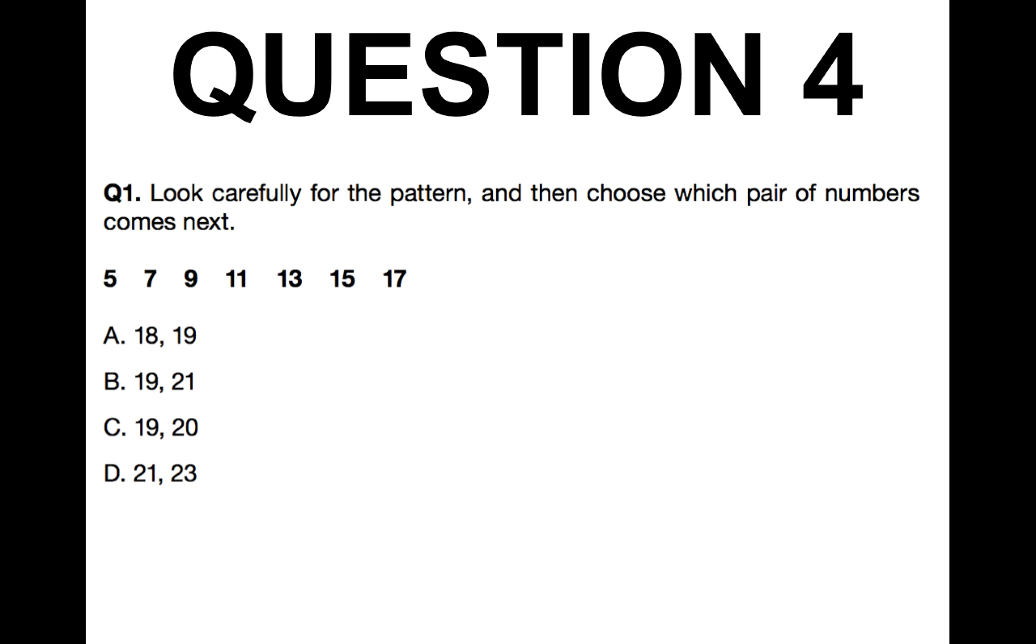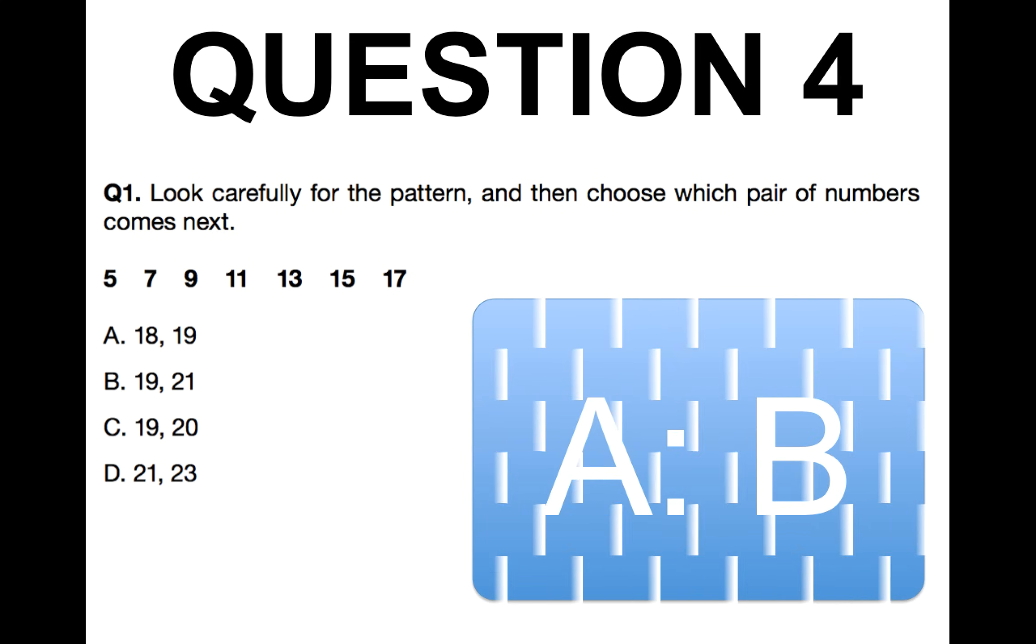So looking carefully at the pattern then choose which pair of numbers come next. Well you'll notice that the sequence is going up each time. And what number is it going up by? Well you'll see there 5 and 7, from 7 to 9, 9 to 11, 11 to 13, 13 to 15, 15 to 17. It's going up two each time. So it's quite simple. So the correct answer is B which is 19 and then 21. So again if you've got anything different please put it in the comments box below the video.